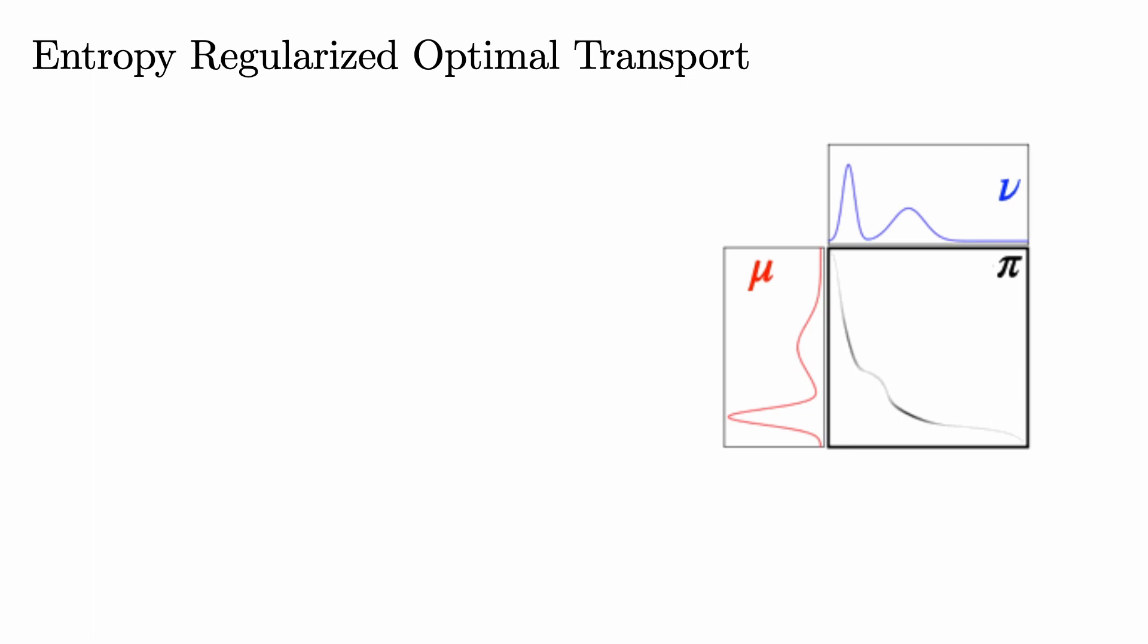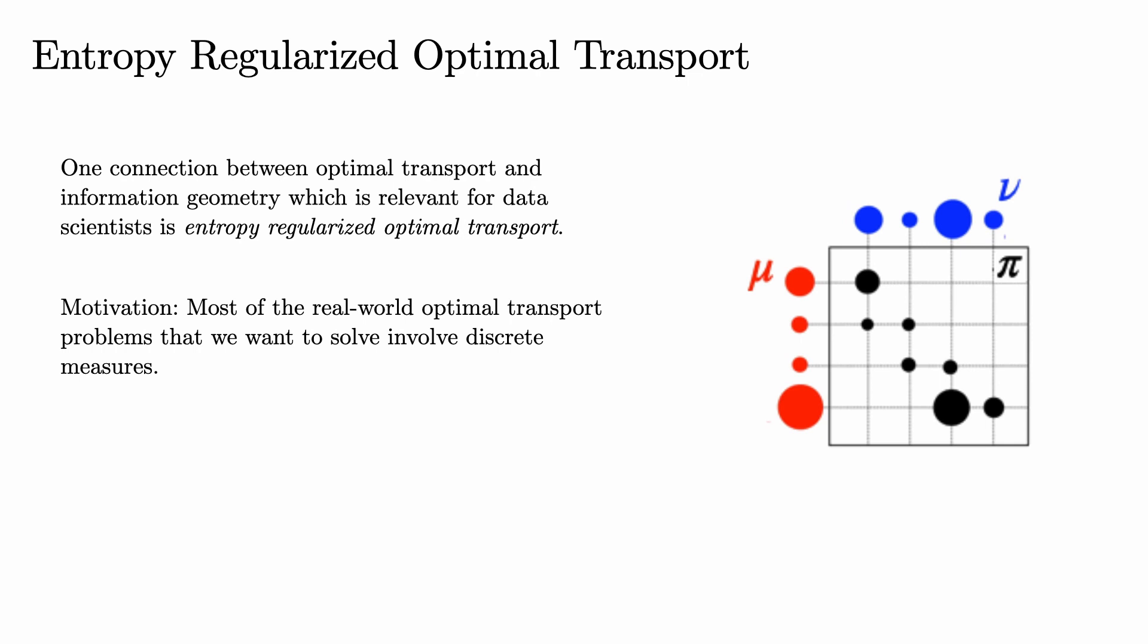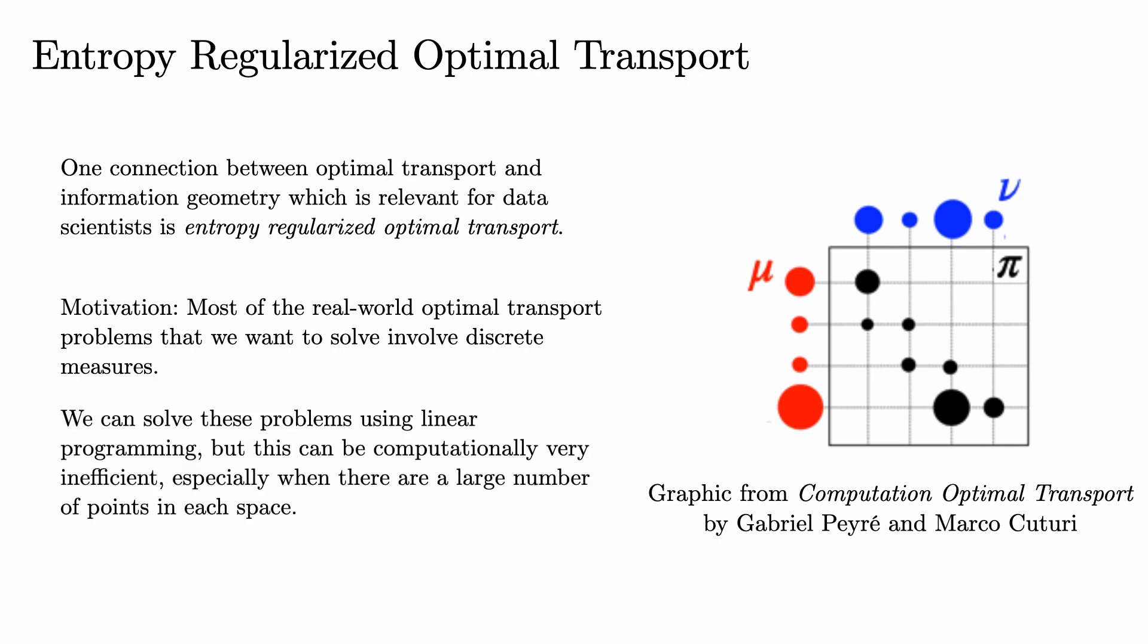Another important way in which these two areas combine is entropy-regularized optimal transport. Most of the optimal transport problems we want to solve in the real world involve discrete measures. And while the simplex algorithm gives a way to solve these problems using linear programming, this can be very computationally inefficient, especially when there are a large number of points in each space. In order to speed up the calculation, instead of computing the exact solution to an optimal transport problem, we approximate it.